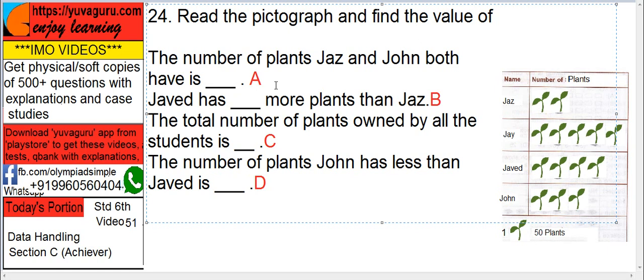Number of plants Jazz and John both have is, Jazz has 2, John has 3, so 5, 5 into 50, 250.